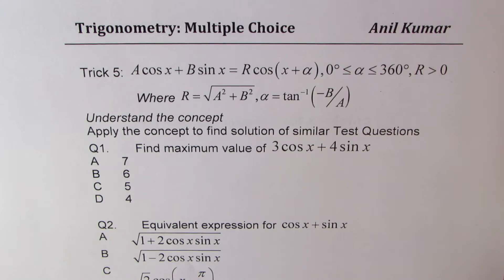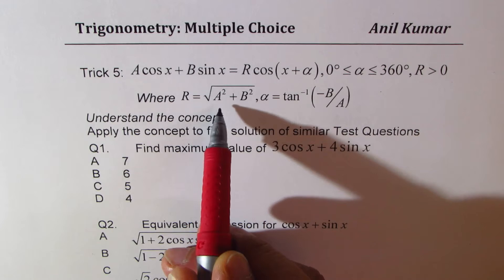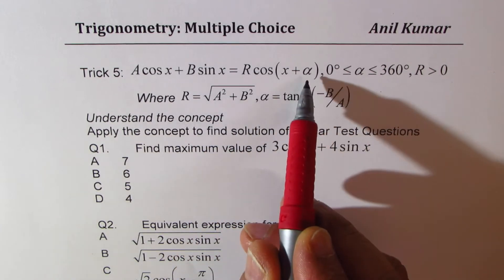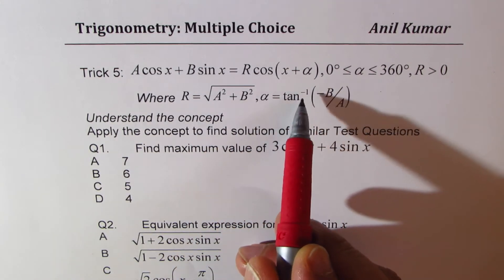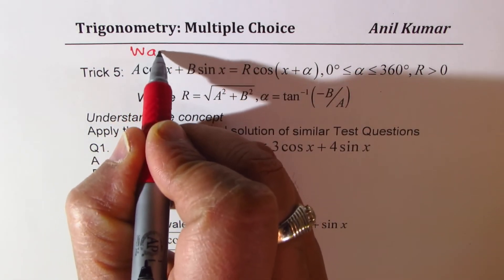This is a very standard formula where R equals the square root of A squared plus B squared, and the angle alpha equals tan inverse of minus B over A. This is also called the wave equation.